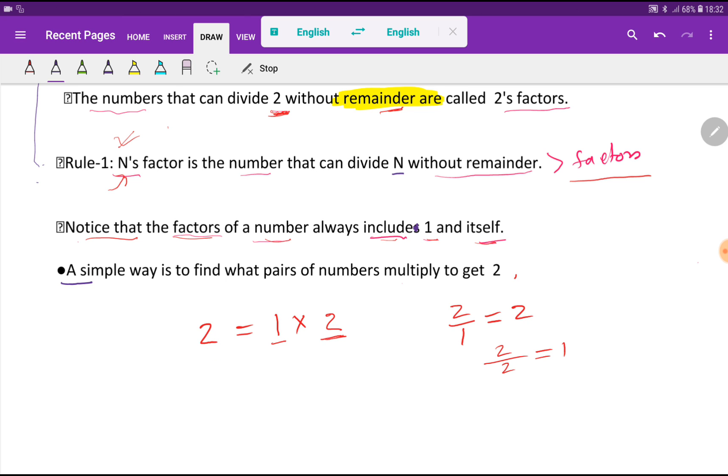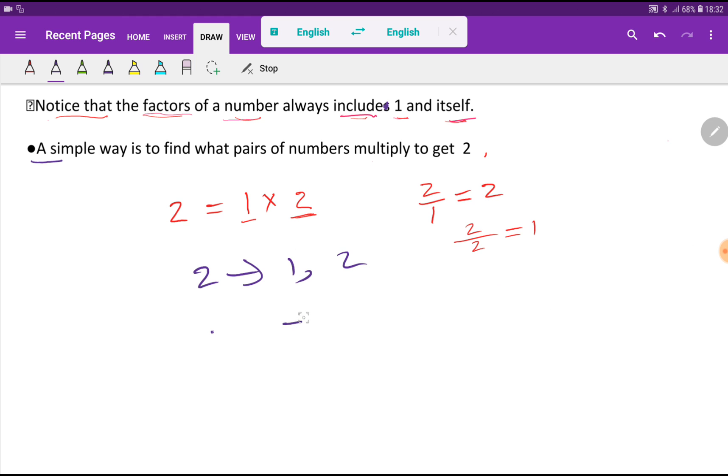So what will be the negative factor of two? The positive factor of two is one and two. The negative factor of two will be minus one and minus two. Just you have to add minus sign before the positive factors, then you will get negative factors of two.